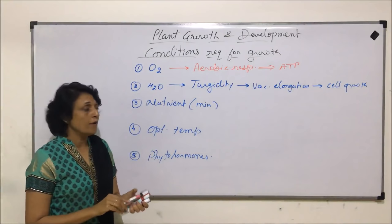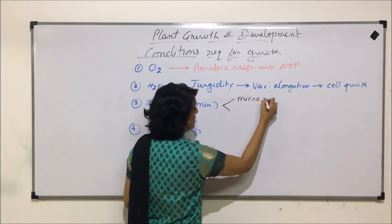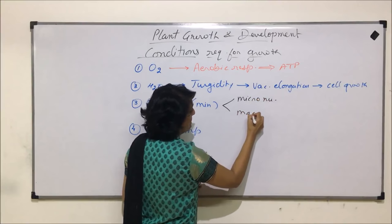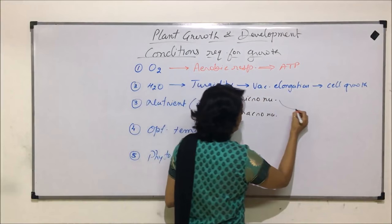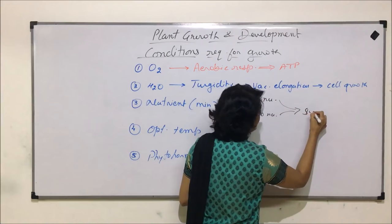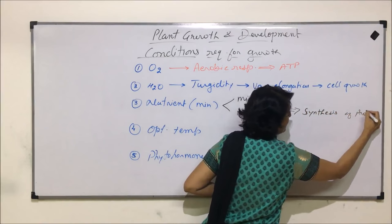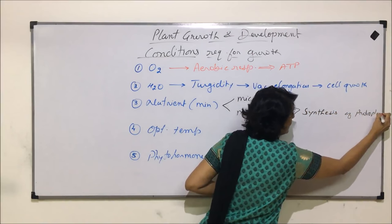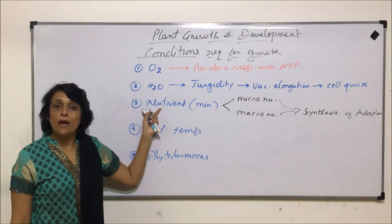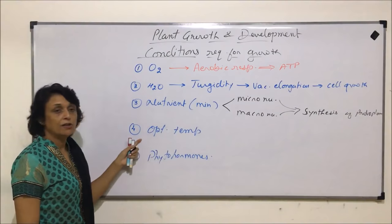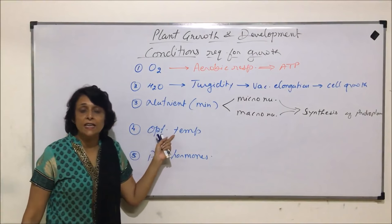When we talk of nutrients, we are talking of two categories: micronutrients and macronutrients. Both of these are required for synthesis of protoplasm. So for protoplasm synthesis, both micro and macronutrients are essential.